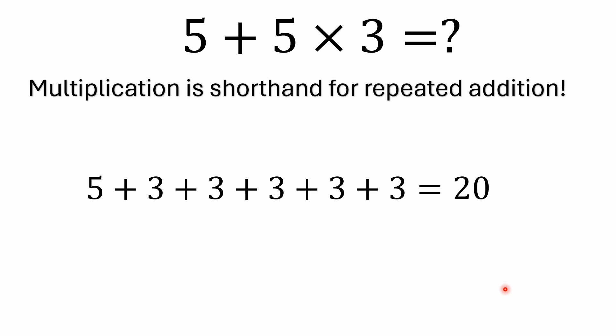What is 5 × 3? Well, it's the same thing as adding up three five times. You've got 5 + 3 is 8, 8 + 3 is 11, 11 + 3 is 14, 14 + 3 is 17, 17 + 3 is 20.